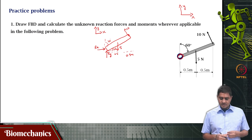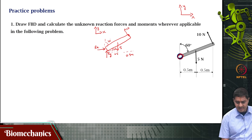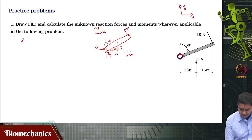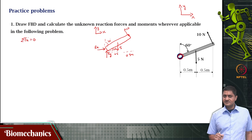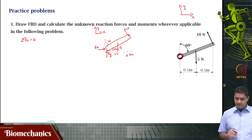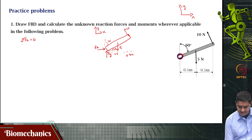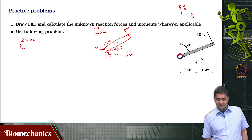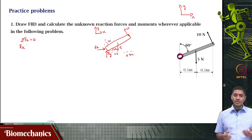Let us write out the unknown forces in the x direction. We write sigma Fx equals 0, which means this object does not accelerate in the x direction, so the sum of all forces in the x direction is zero. Rx is in the positive x direction. The 5 Newton force has no component in the x direction because it acts entirely in the negative y direction.